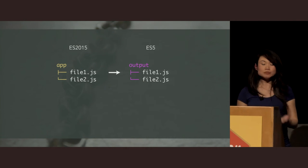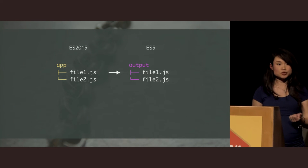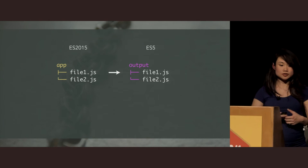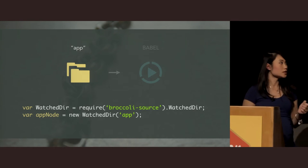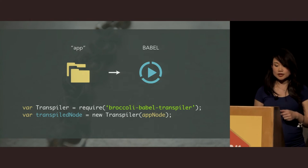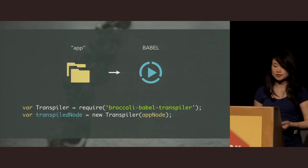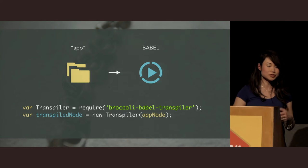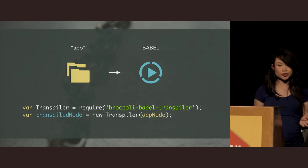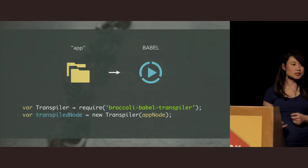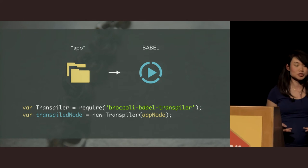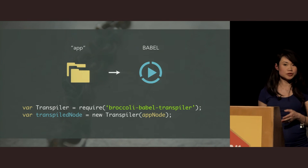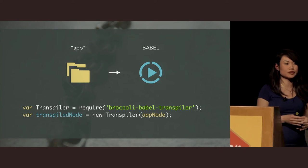Let's say we have a very simple app directory with code written in ES2015 syntax, and the goal is to transpile it to ES5. We can define this build in terms of broccoli nodes. Our source node is the app directory, and our transform node is an instance of a plugin that will do the transpilation for us. There's already a plugin called broccoli-babel-transpiler that we can use. We just create an instance of it, pass it the node with the code to be transpiled, and at build time it will read from that input node and transpile every JavaScript file it finds into ES5.